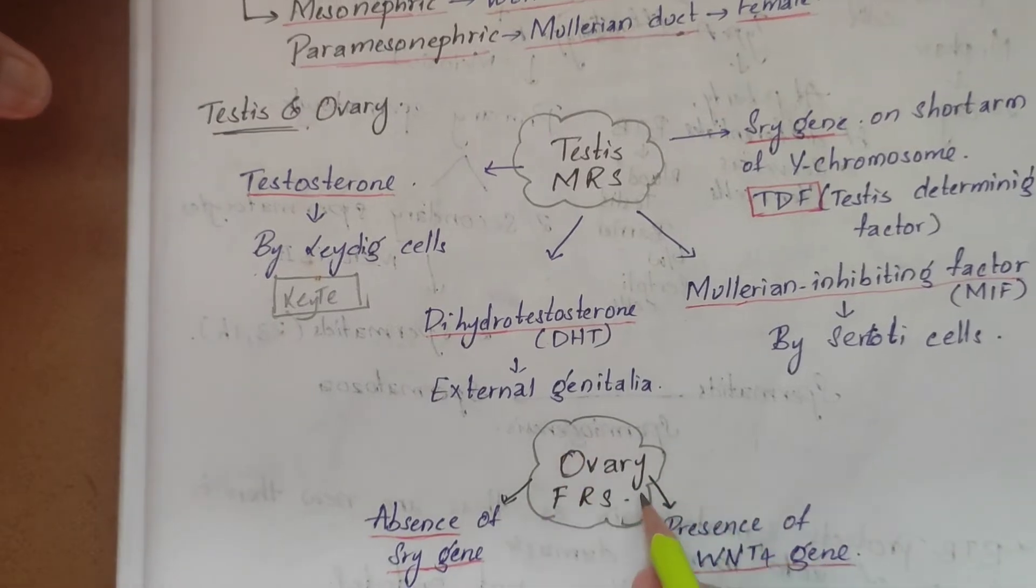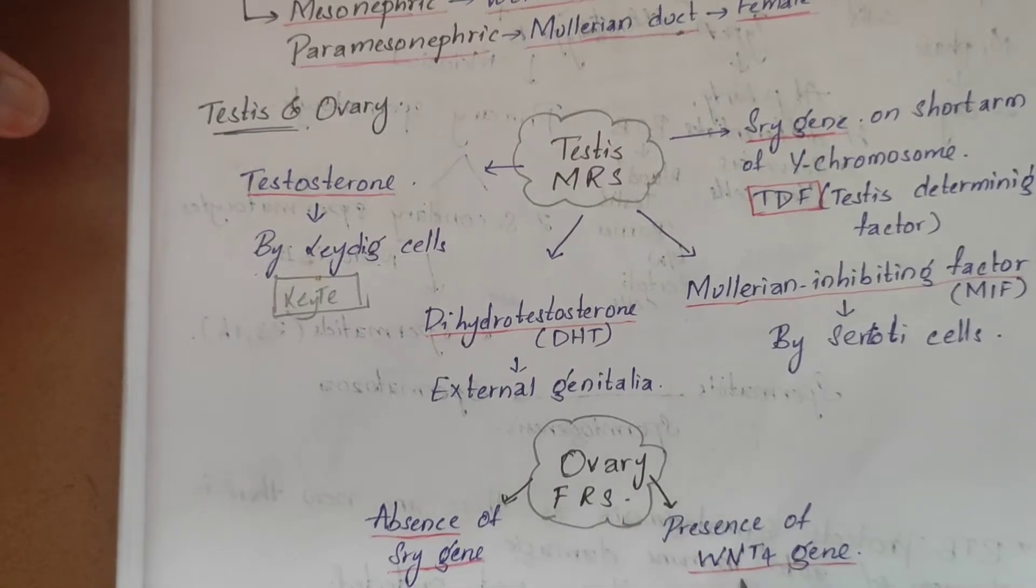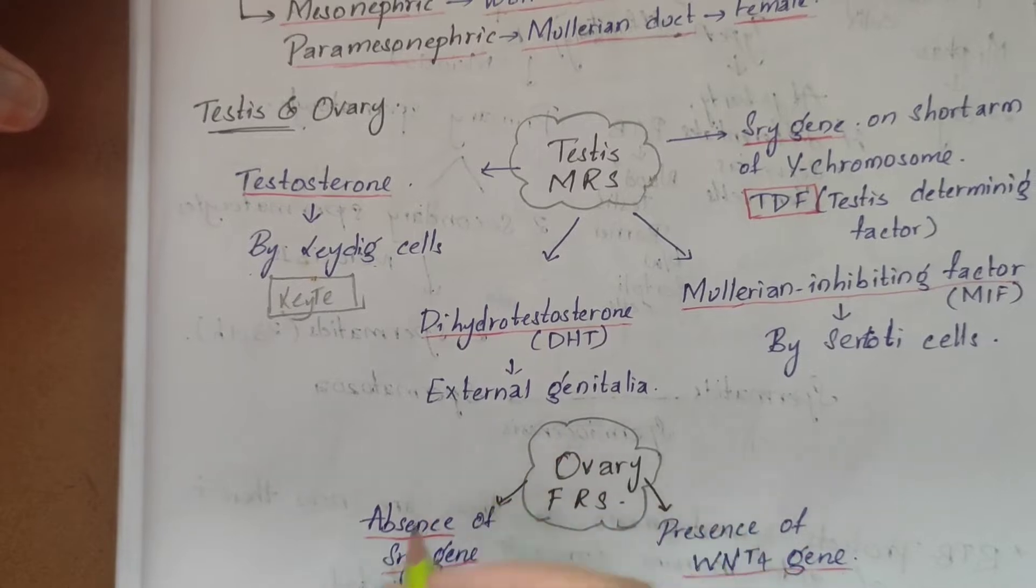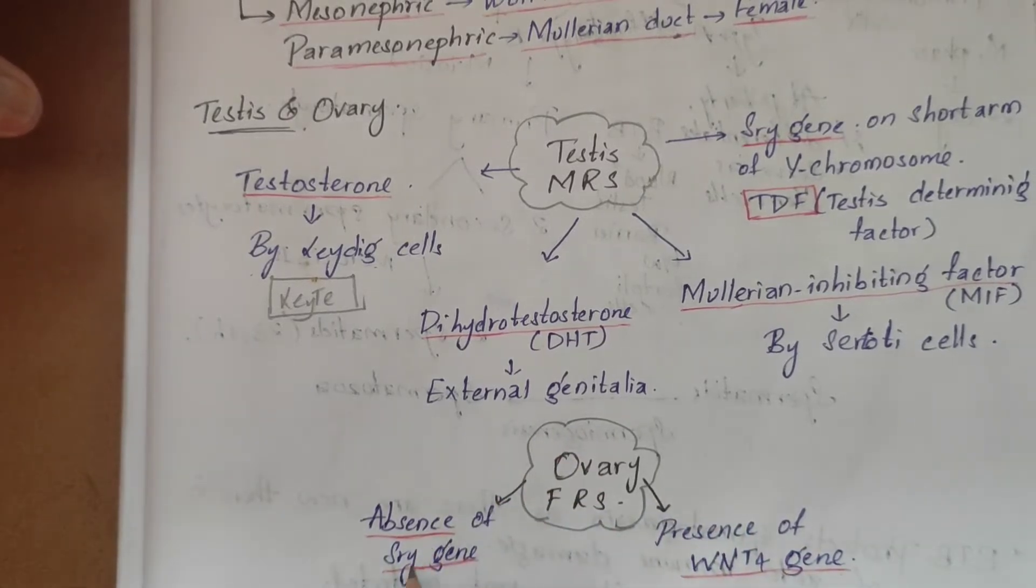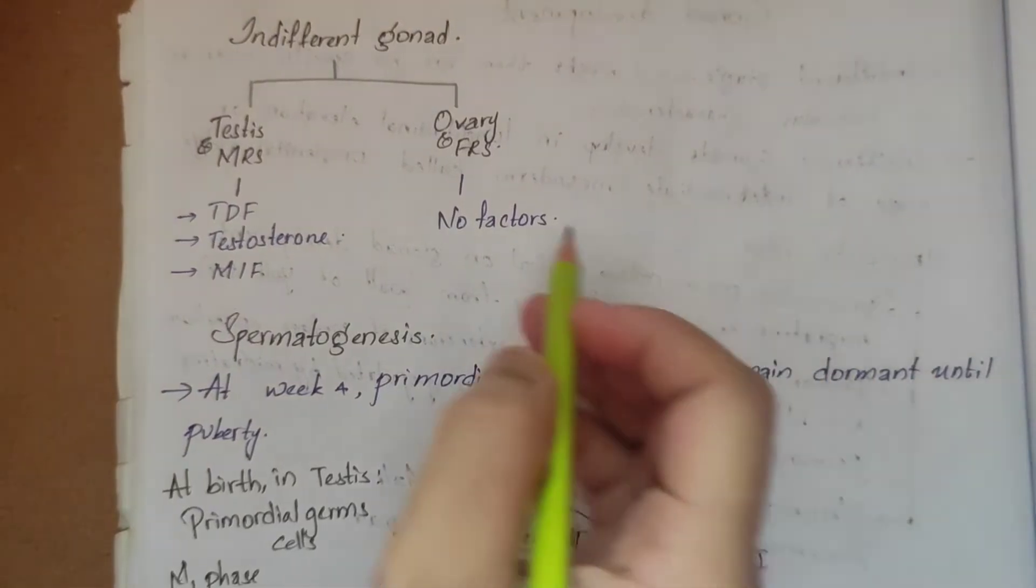Next is ovary and the female reproductive system. It has the presence of WNT4 gene, and this develops in the absence of SRY gene.